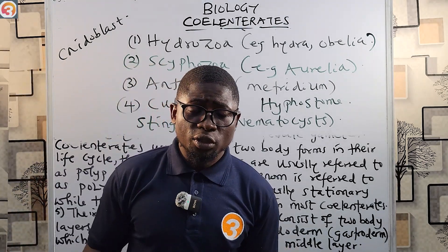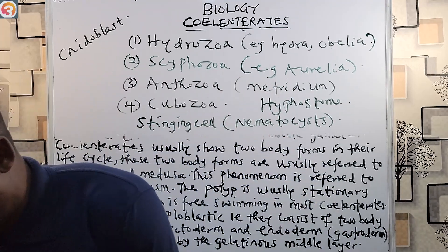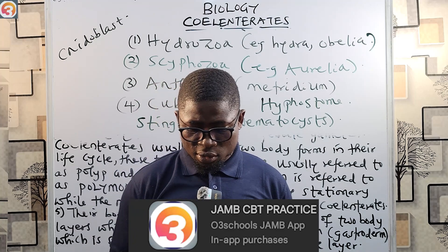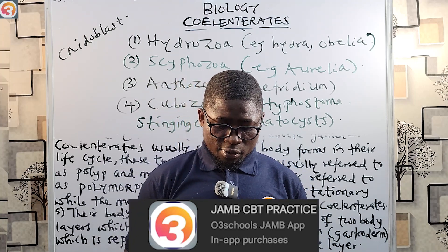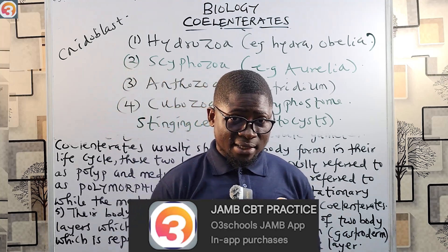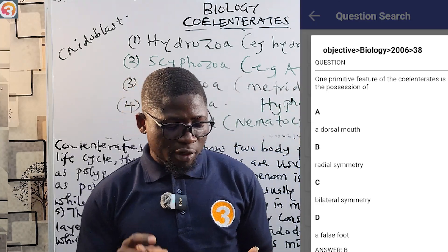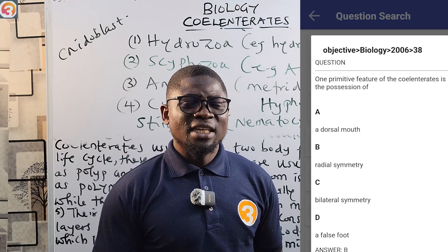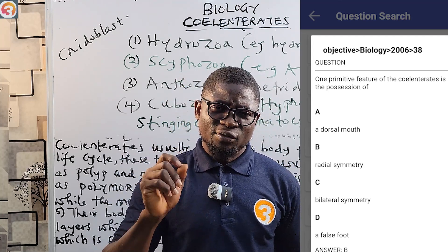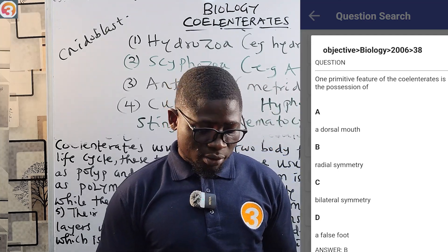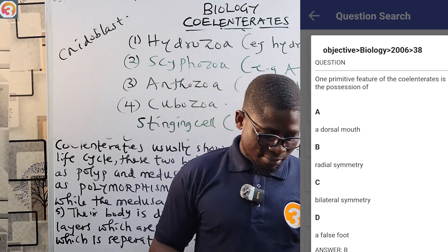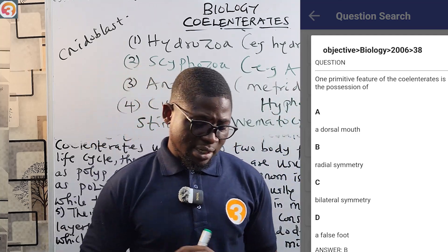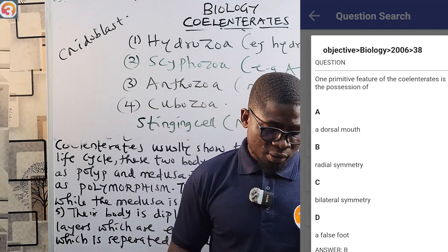Now let's look at some practice questions from the O3Schools Jam app using the question search feature. From 2006, question number 38: 'One primitive feature of the coelenterates is...' — the answer is radial symmetry, which I mentioned at the beginning of the class. The options are: A) anus, B) radial symmetry, C) bilateral symmetry, D) false foot. Coelenterates have radial symmetry, and it is one of their primitive features.